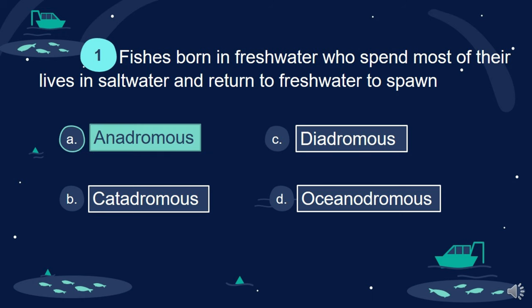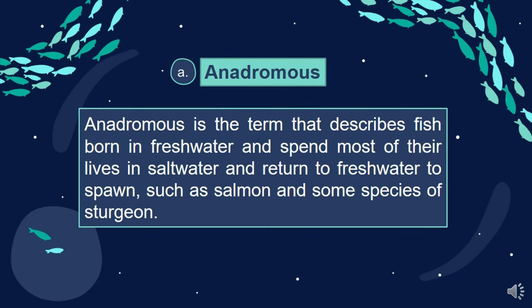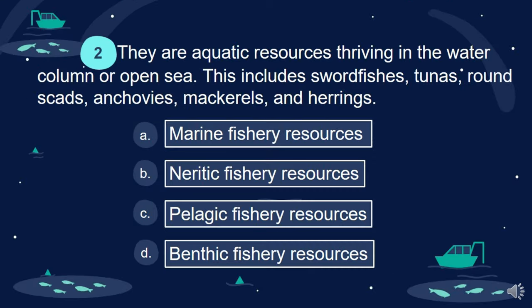Answer: A. Anadromous. Anadromous is the term that describes fish born in fresh water that spend most of their lives in salt water and return to fresh water to spawn, such as salmon and some species of sturgeon.